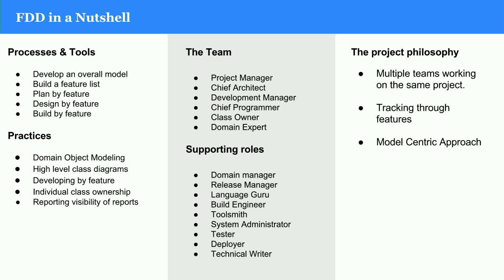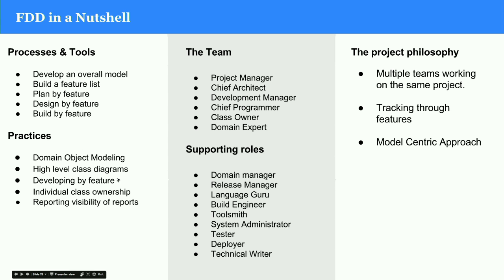FDD in a nutshell — processes and tools: develop an overall model architecture, build a feature list, plan by feature, design by feature, build by feature. Practices include domain object modeling, high-level class diagrams, developing by feature, individual class ownership, and reporting visibility. The team is widespread in FDD — there is no set team size. Roles include project manager, chief architect, development manager, chief programmer, domain experts, and several supporting roles. Project philosophy is multiple teams working on the same project, tracking through features, with a model-centric approach.